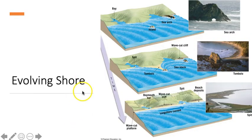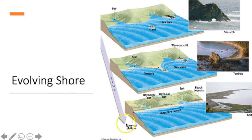Evolving shore. Over time, deposition will replace erosion as the dominant landscape-shaping process. Sand is deposited on the beach, but it can also be shaped into unique landforms like tombolos, spits, and baymouth bars.